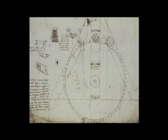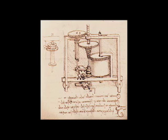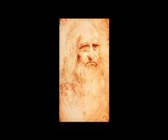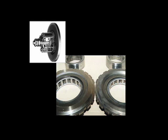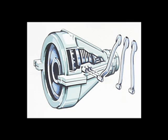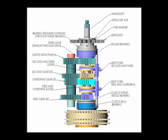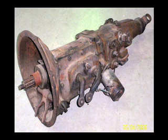Attempts to design a better transmission date back to Leonardo da Vinci. In the early 1900s, Henry Ford sought to invent a transmission to replace the manual shifters in his cars — one that would seamlessly shift and vary infinitely to any gear ratio desired: an infinitely variable transmission. After investing many years and dollars, he deemed the concept to be impossible. The pursuit of a practical infinitely variable transmission has led to frustration and failure by many of the world's best engineering minds.